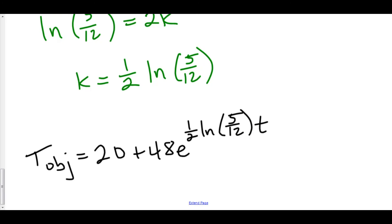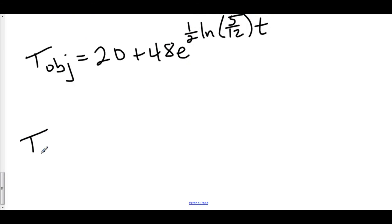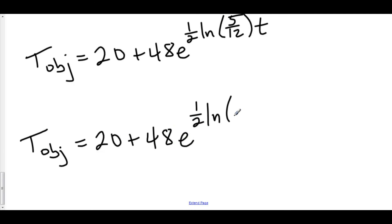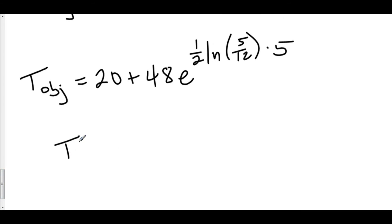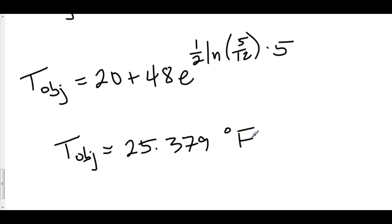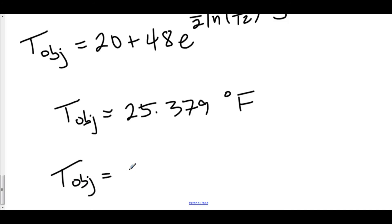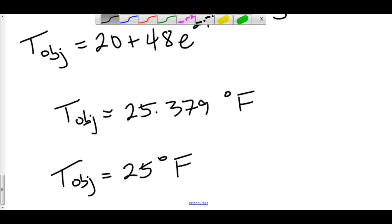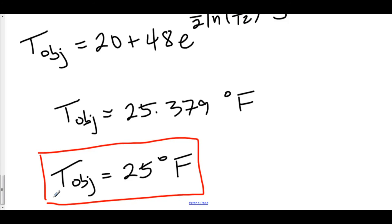Finally, we can solve the actual problem: what is the temperature of the object after 5 hours? We plug 5 into t: T-object equals 20 plus 48·e to the (1/2)·ln(5/12) times 5. When you plug all of this into a calculator, the temperature after 5 hours is 25.379 degrees Fahrenheit. The problem wants us to round to the nearest degree, so the temperature is approximately 25 degrees Fahrenheit. So a 68-degree roast put into a 20-degree freezer is 25 degrees Fahrenheit after 5 hours.